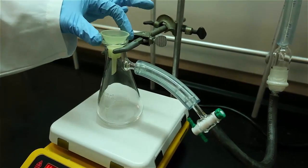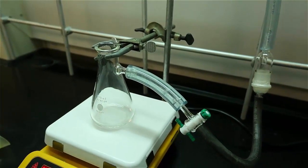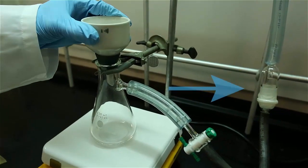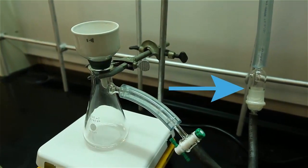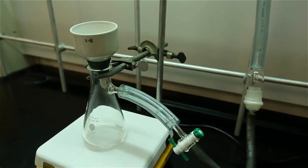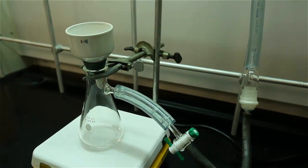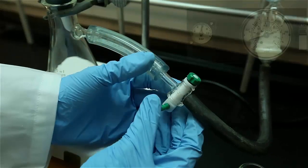You would need to decide whether to use the Hirsch or Buchner funnel. The plastic Hirsch funnel is used for small volumes, unlike the larger porcelain Buchner funnel. Notice the trap connecting the vacuum apparatus and the sidearm receiving flask. The purpose of the trap is to prevent the filtrate from reaching the vacuum apparatus.